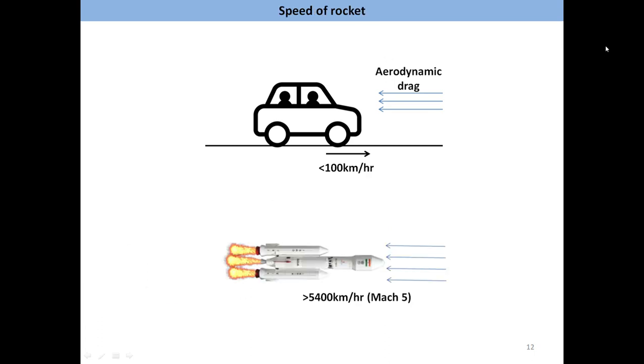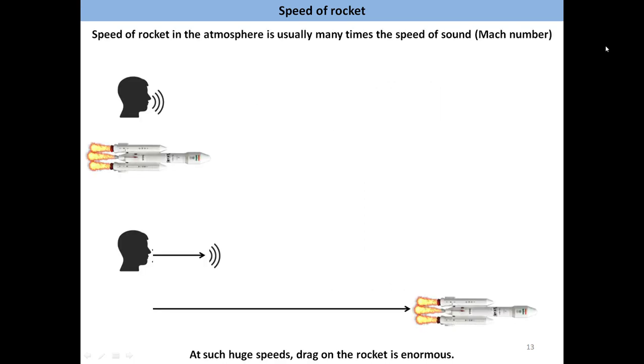The average speed of a vehicle that travels on the road is less than 100 km per hour. Rockets, on the other hand, achieve speeds of up to 5400 km per hour while traveling through the atmosphere. This speed of 5400 km per hour is around 5 times the speed of sound itself.